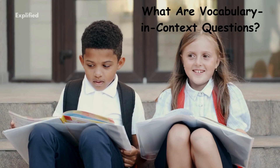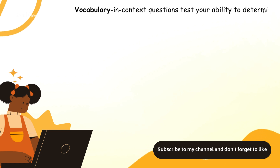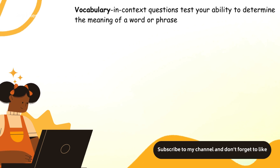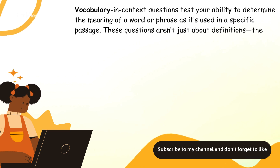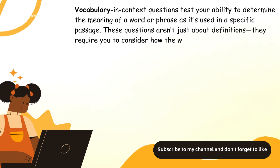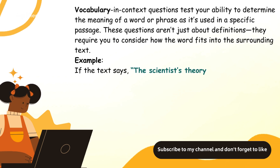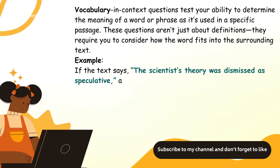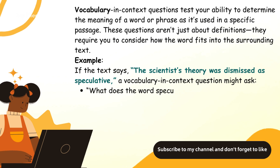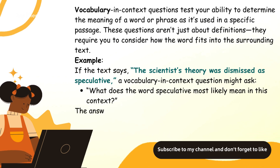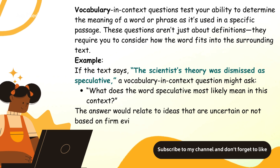What are vocabulary and context questions? These questions test your ability to determine the meaning of a word or phrase as it's used in a specific passage. They aren't just about definitions — they require you to consider how the word fits into the surrounding text. For example, if the text says 'the scientist's theory was dismissed as speculative,' a question might ask what the word 'speculative' most likely means. The answer would relate to ideas that are uncertain or not based on firm evidence.